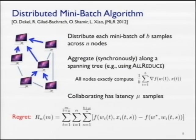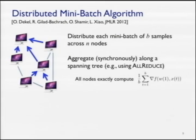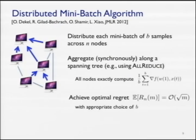The regret definition accounts for the fact that in one round, the total samples seen are B — used to compute one mini-batch gradient — plus mu additional samples arriving during aggregation, divided across N nodes. Choosing B appropriately, one can still achieve optimal regret scaling, showing that communication latency doesn't hurt in terms of the order-wise rate of regret growth. We get the speed-ups we hoped for from parallel computing.